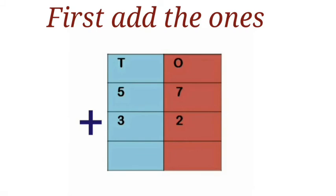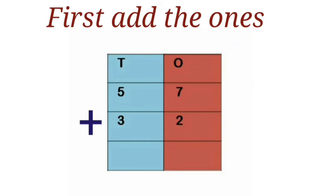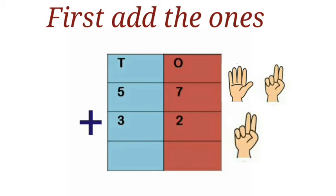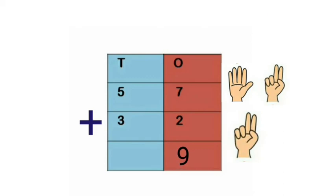Next, we find the sum. First we add the 1's place: 7 plus 2. Put 7 on the fingers, next 2 on the fingers. Count on from 7: 8, 9. So the answer is 9.